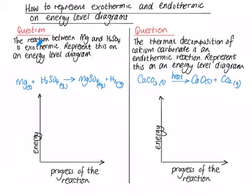So here are two questions. The one on the left hand side is exothermic. The one on the right hand side is an endothermic reaction. The reaction between magnesium and sulfuric acid is exothermic. Represent this on an energy level diagram.